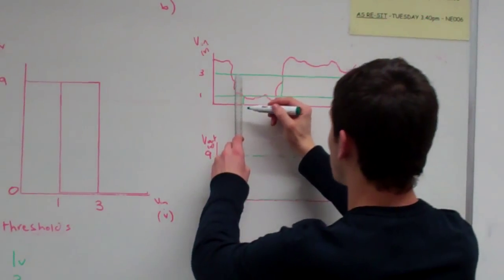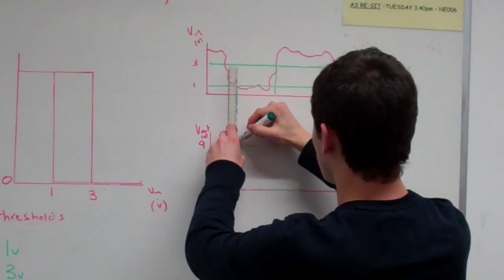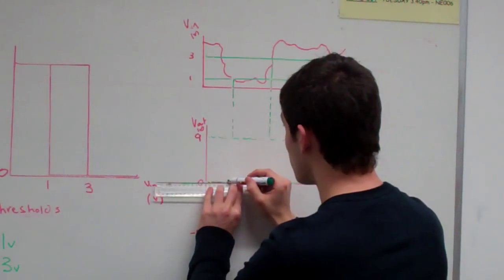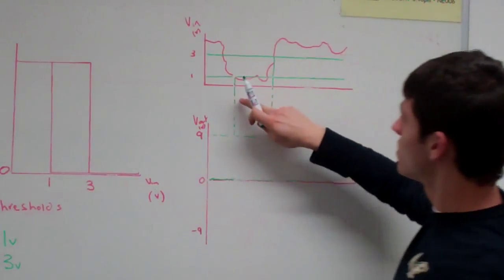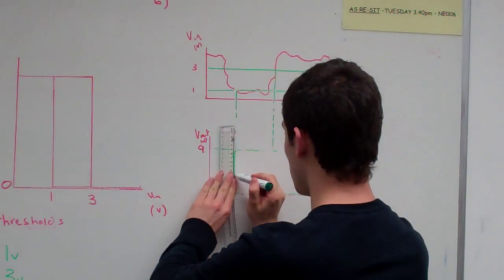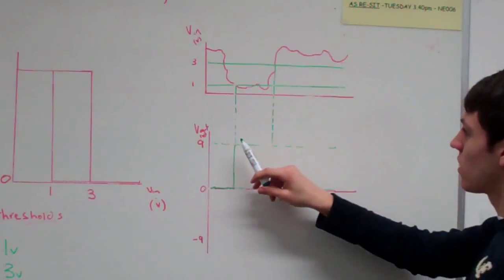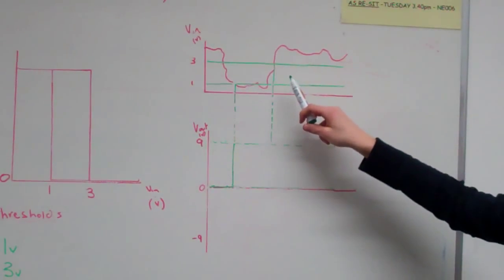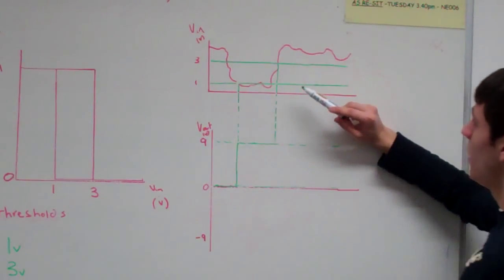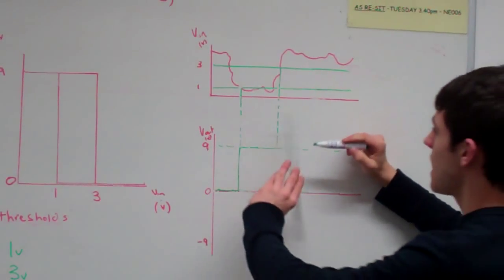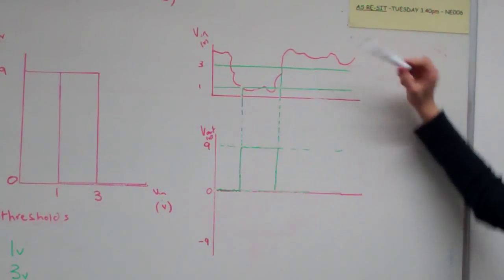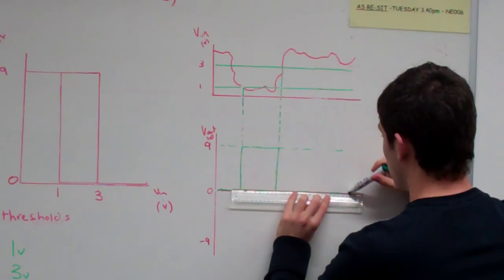Now in sketching this, we can draw these values down so we know where they are. It's going to start off at 0 volts. It's going to go along to where the inverter goes down below the 1 volt, and it will rise up to the output 9 volts. Then it will stay constant at 9 volts until the analogue signal goes above 3 volts, which is over here. Then that causes it to switch down. And from then on, we don't go below 1 volt or above 3 volts, so we stay constant all the way to the end.